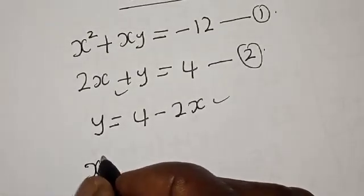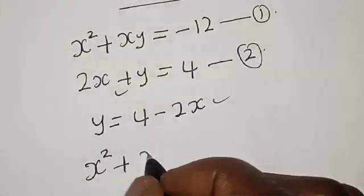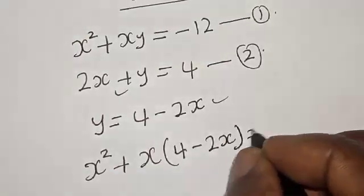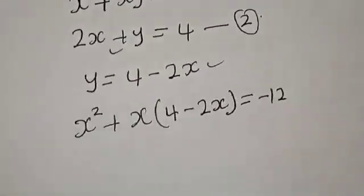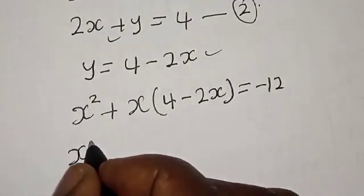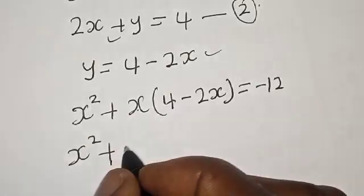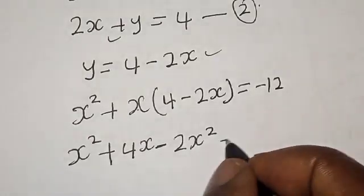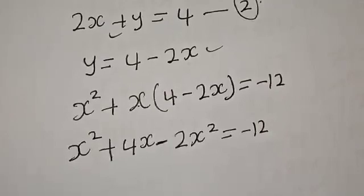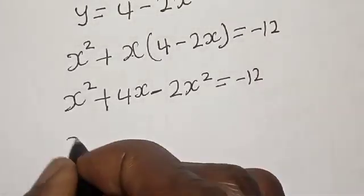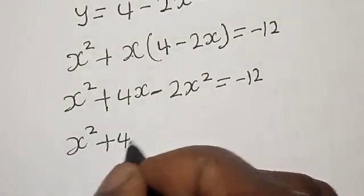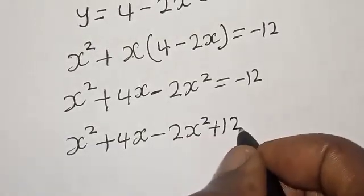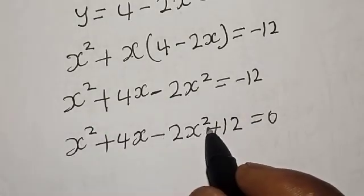Then we have x squared plus x into (4 minus 2x) is equal to minus 12. Now we have x squared plus, opening the bracket, 4x minus 2x squared is equal to minus 12.